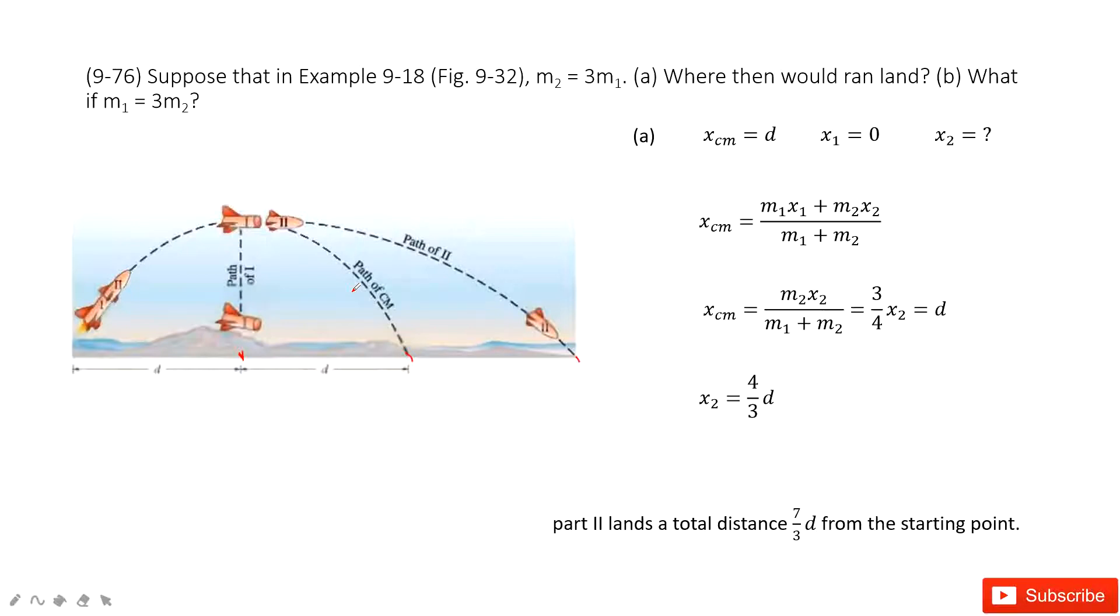The first one is we need to find where it lands. So where it lands, that means we need to find location x2. And so there, we can consider this point as a reference point 0. So we find the first part is the location for x1, 0. Location for the part 2, we don't know. And the center of mass is d.